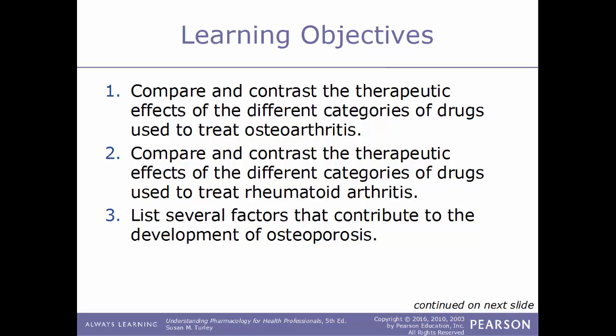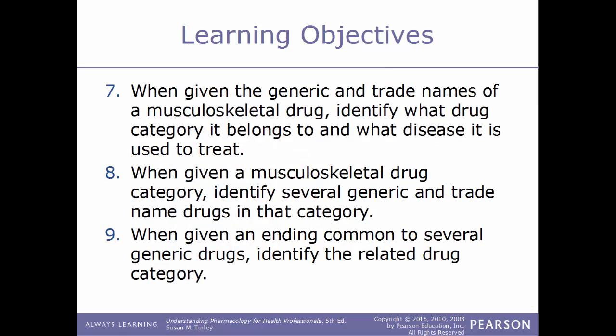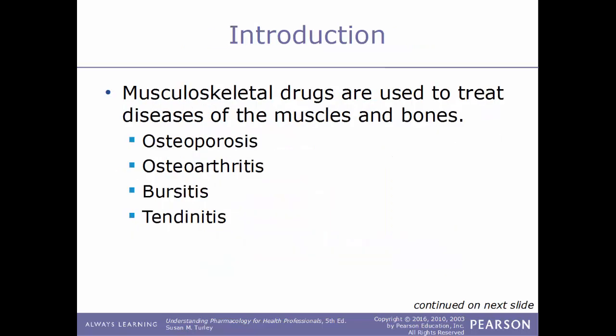Additional learning objectives include: listing several factors that contribute to the development of osteoporosis; describing the therapeutic effects of different categories of drugs used to treat osteoporosis; describing the therapeutic effects of skeletal muscle relaxant drugs and drugs used to treat fibromyalgia; identifying trade names from generic drug names; identifying drug categories and diseases treated; and identifying the drug category associated with common generic drug name endings.